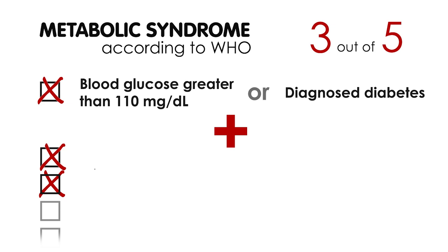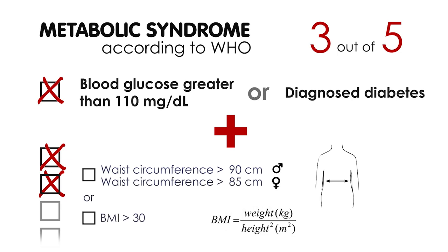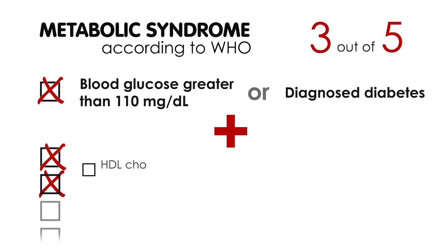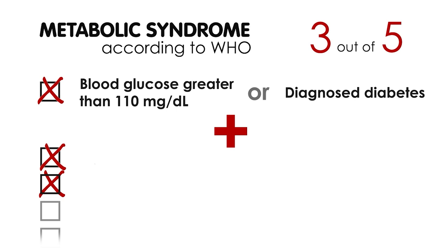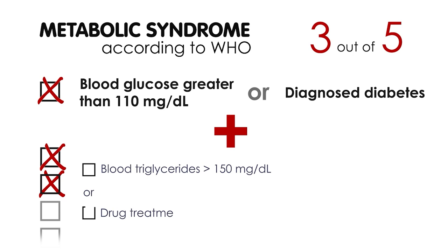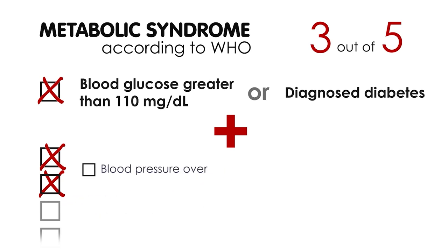Waist circumference over 90 cm in men and a little bit less in women. Body mass index, in short BMI, above 30 kg per square meter. HDL cholesterol below 35 mg per deciliter in men or 40 mg per deciliter in women, or drug treatment for low HDL cholesterol. Blood triglycerides over 150 mg per deciliter or drug treatment for elevated triglycerides. And blood pressure over 140 to 90, or drug treatment for hypertension.